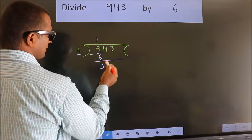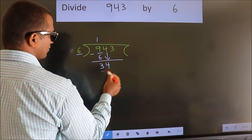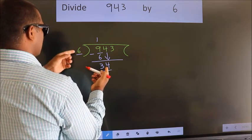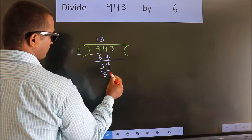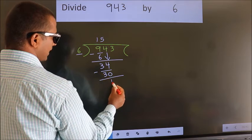After this, bring down the beside number. So 4 down, 34. A number close to 34 in the 6 table is 6 times 5 is 30. Now we subtract. We get 4.